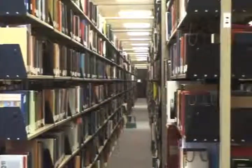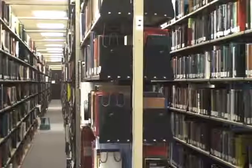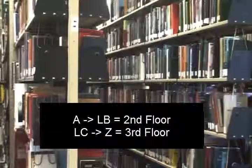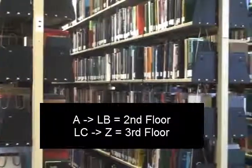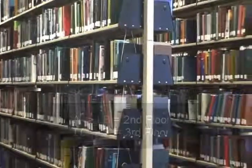If the item is listed as main stacks, you will need to determine which floor it is on. To do this, look at the first letters on the class number. If the letters fall alphabetically between A and LB, then it is on the second floor. If the letters are between LC and Z, the item will be on the third floor.